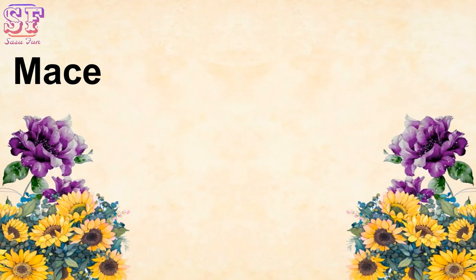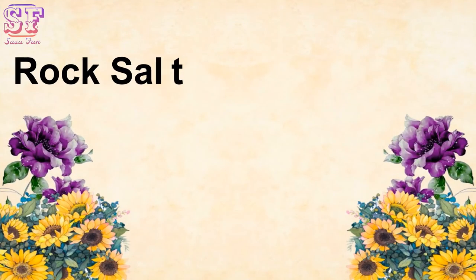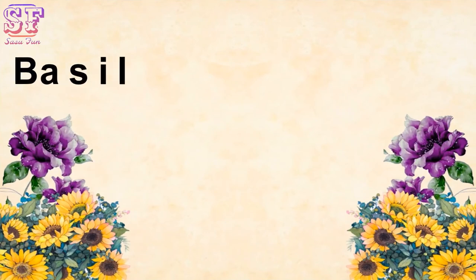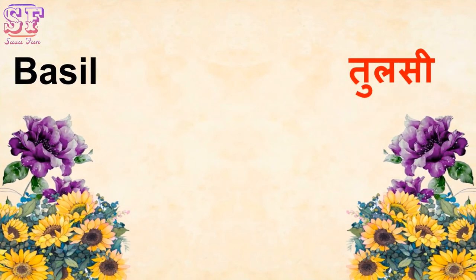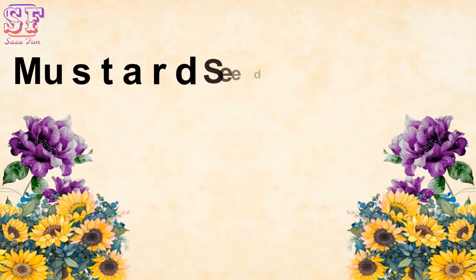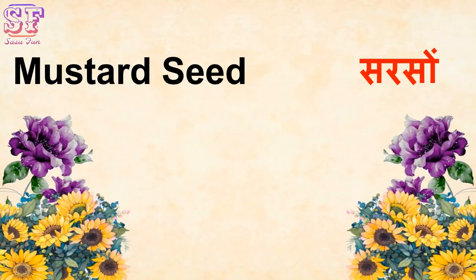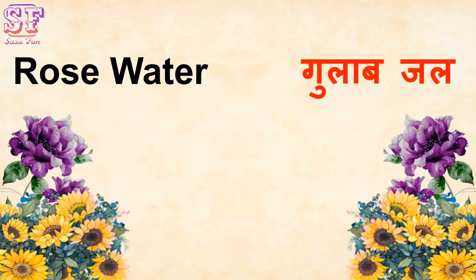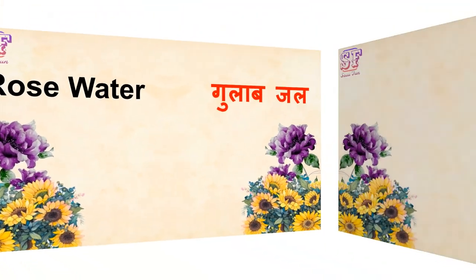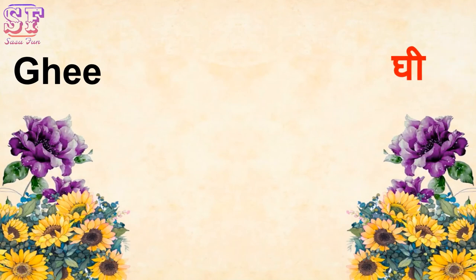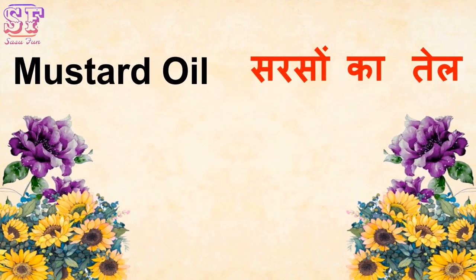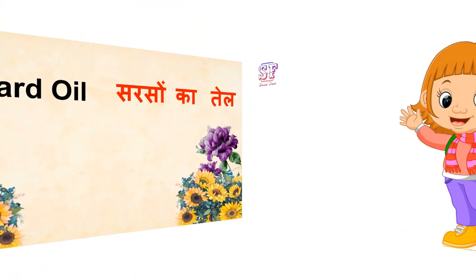Mace — Javitri. Rock Salt — Sondha Namak. Basil — Tulsi. Mustard Seed — Sarson. Rose Water — Gulab Jal. Ghee. Mustard Oil — Sarson. Thanks for watching.